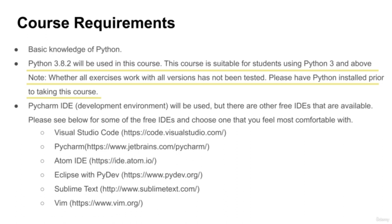In this course, we'll be using Python 3.8.2. This course is suitable for students using Python 3 and above, but whether all exercises work across all Python 3+ versions has not been tested, so we cannot guarantee 100% that your version will work exactly the same. Please have Python installed prior to taking this course. After publication, Python 3.9 or 3.10 may become available, but in general there usually won't be any major changes, so it shouldn't be a problem.